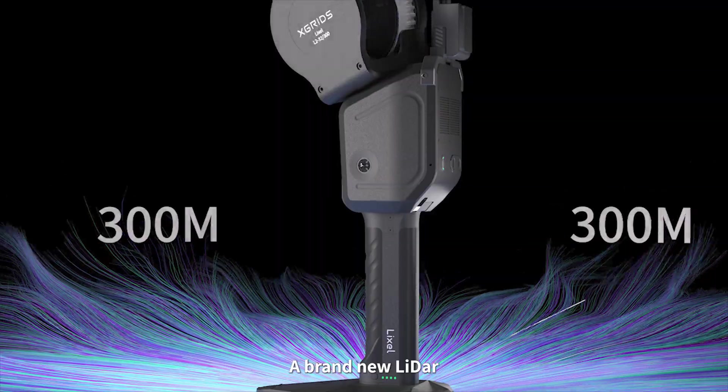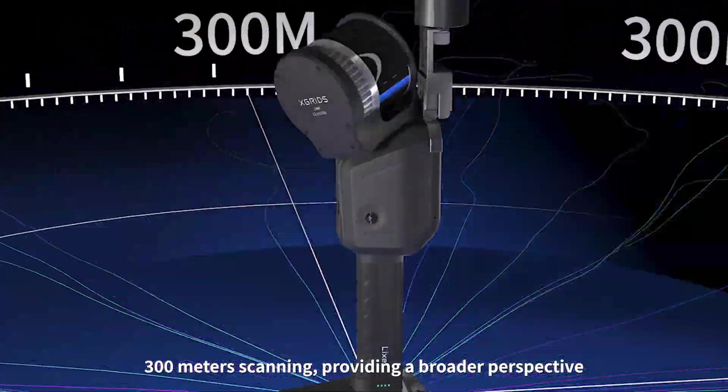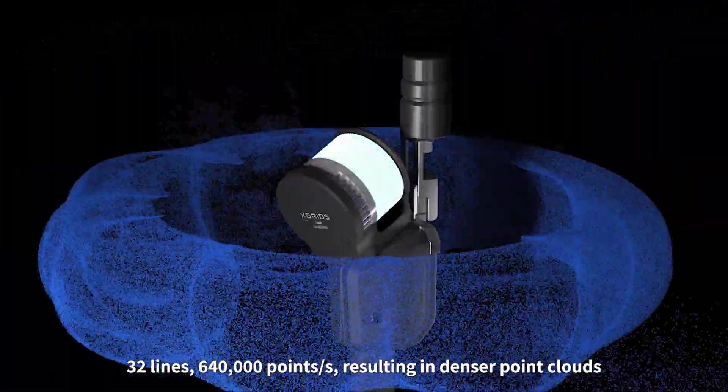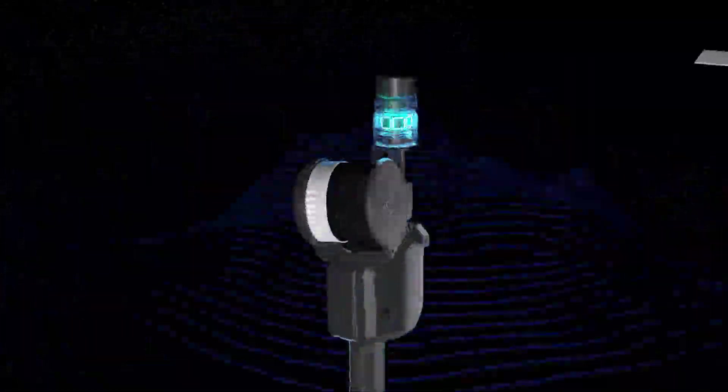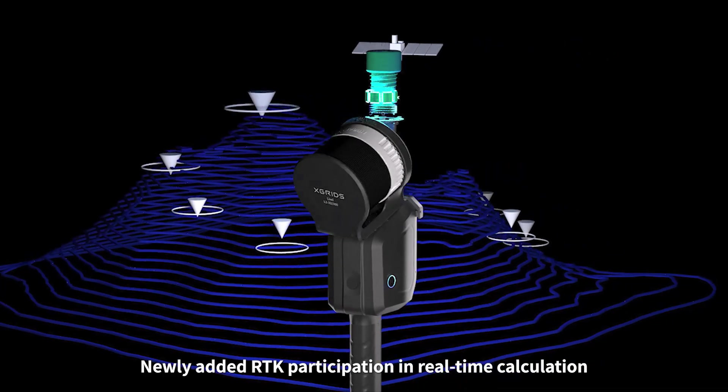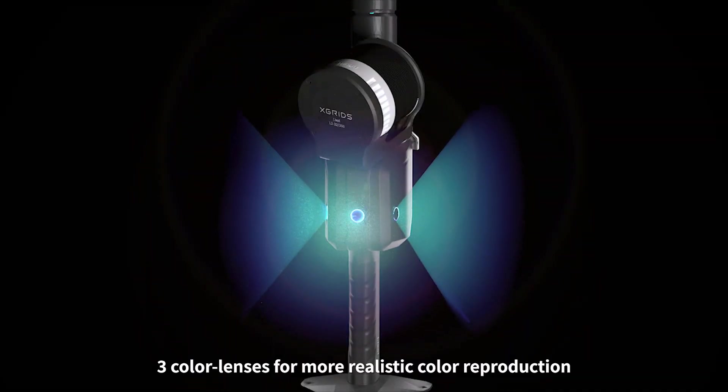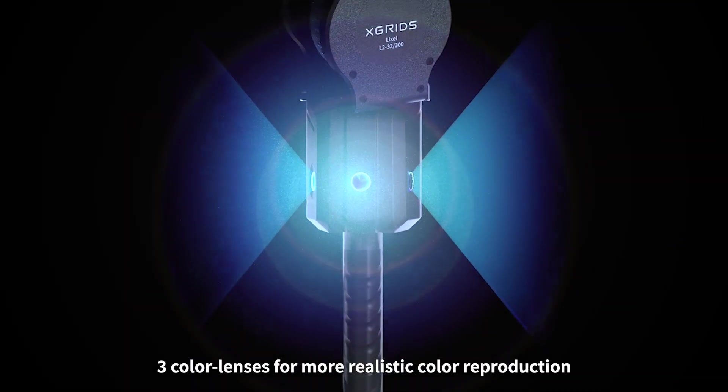A brand new LiDAR 300m scanner, providing a broader perspective. 32 lines, 640,000 points per second, resulting in denser point clouds. Newly added RTK participation in real-time calculation, 3-color lenses for more realistic color reproduction.